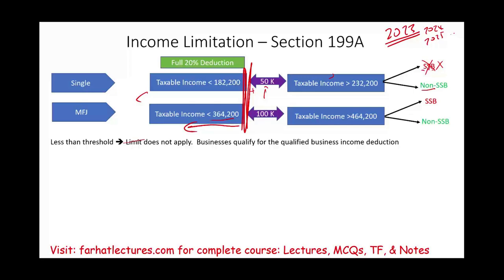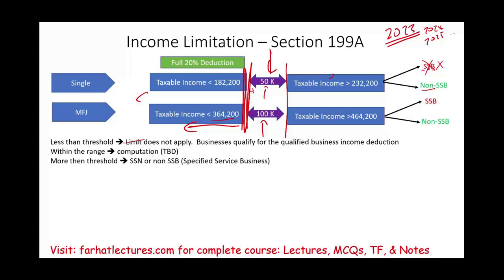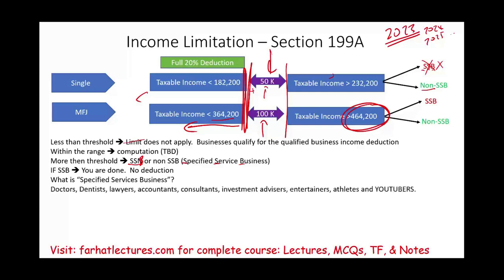More than the threshold, if you are an SSB — specified service business — you cannot get any deduction. Your deduction is zero. If you are an SSB business and above $464,200, look for an answer of zero. For non-SSB businesses above the threshold, we'll need to compute the limitation based on wages and capital investment, which we will discuss in this session.